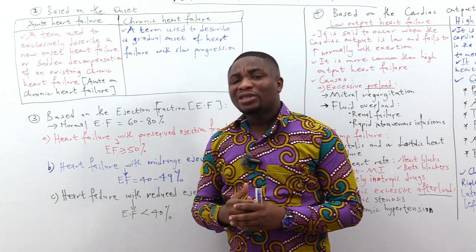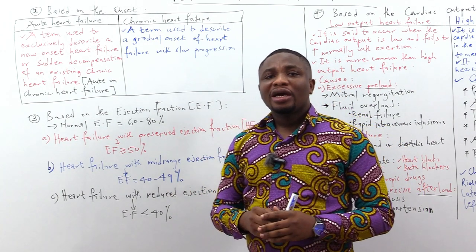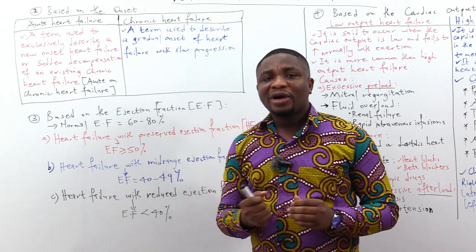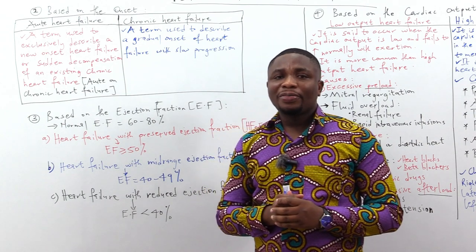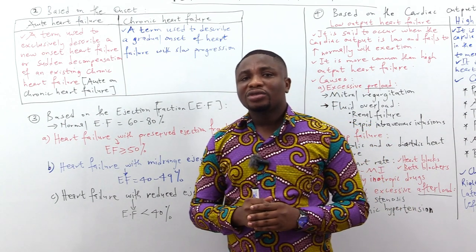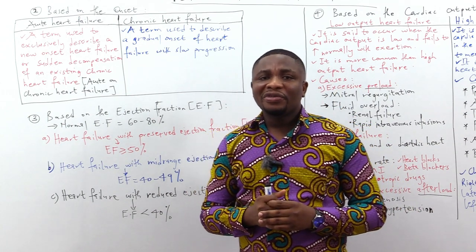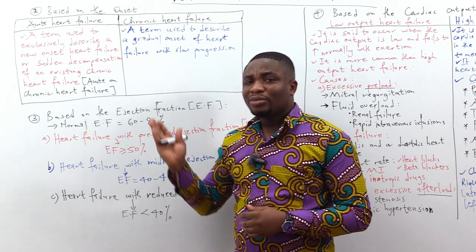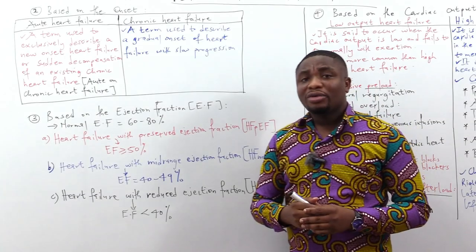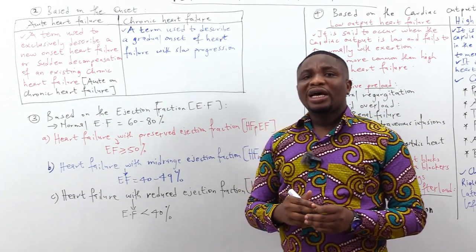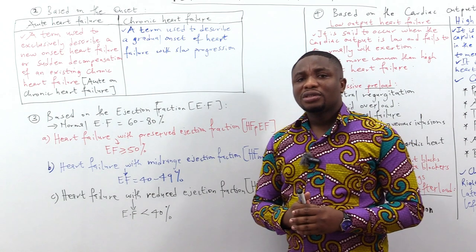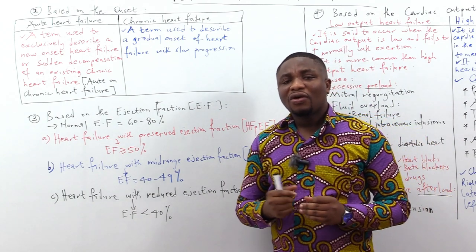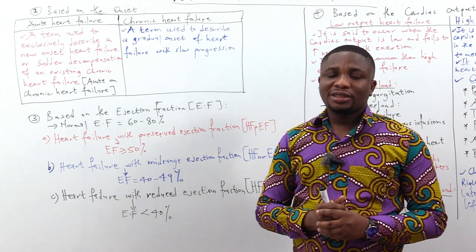Acute heart failure in general is characterized by peripheral or pulmonary edema with or without signs of peripheral hypoperfusion. Chronic heart failure is the term used to describe a gradual onset of heart failure with slow progression.